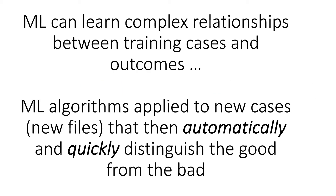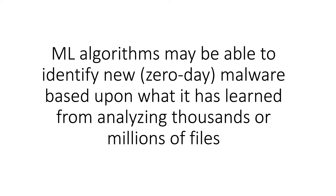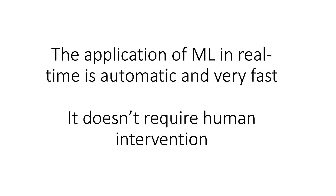Machine learning can learn complex relationships between training cases and outcomes. These algorithms can then be applied to new files to automatically and quickly distinguish good from bad. Machine learning algorithms may be able to identify new, zero-day malware based on what they've learned from analyzing thousands or millions of files. The application of machine learning in real time is automatic, very fast, and doesn't require human intervention.